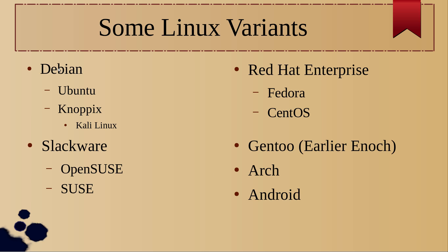Debian, Red Hat, Slackware, Gentoo, and Arch are primary operating systems. Other ones like Ubuntu, KnoppX, Fedora, CentOS, OpenSUSE, SUSE, and Arch are all derived from the main operating systems.